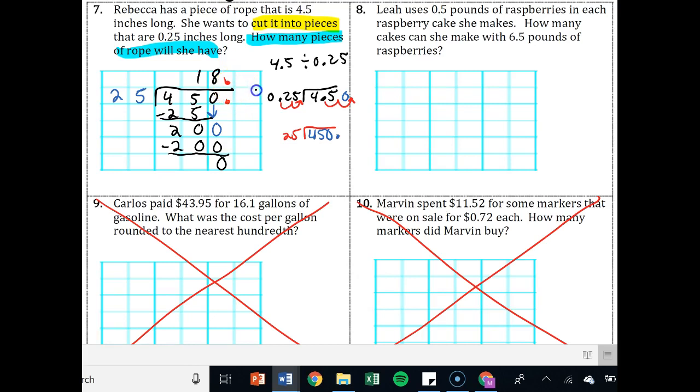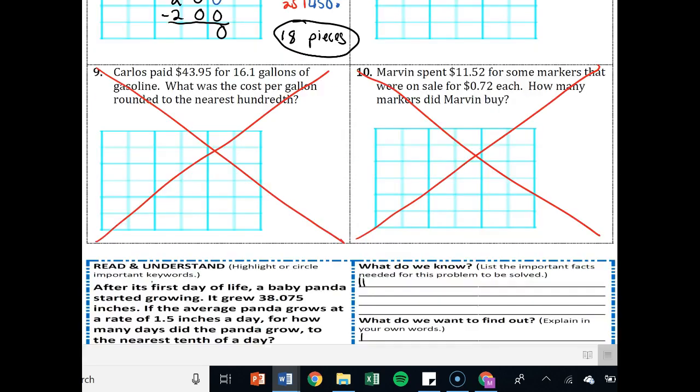And does 25 go into 0? No. You could add a 0 if you want, and does 25 go into 0? No. So you could either say 18 point, 18.0, or just 18. So 18 pieces. Decimal at the end of a whole number you could get rid of. Alright. You try eight on your own.